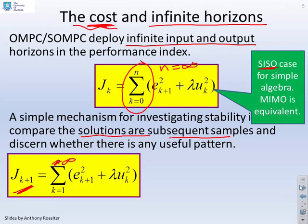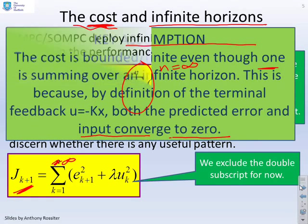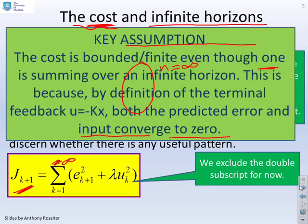And what I'm going to do is exclude the double subscript for now, so I'm not basically saying what sample the decision was taken at. What we want to do is first of all, look at this J and see what we can say about it.